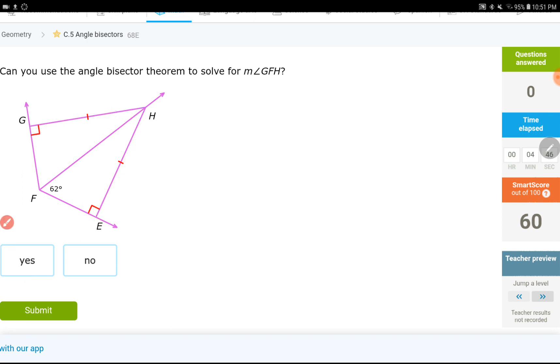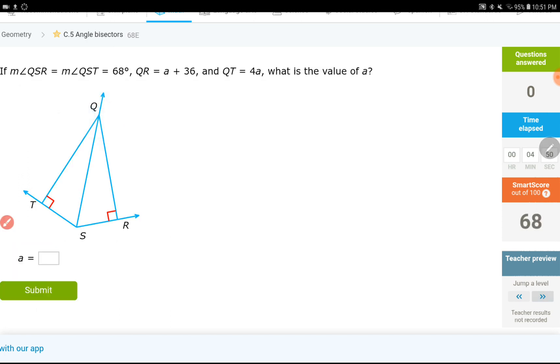Let me do one more. Let's skip a level. Okay. So, right here, we have two angles being equal to 68 degrees. Q, S, R. Let me locate that angle. 68. And Q, S, T.